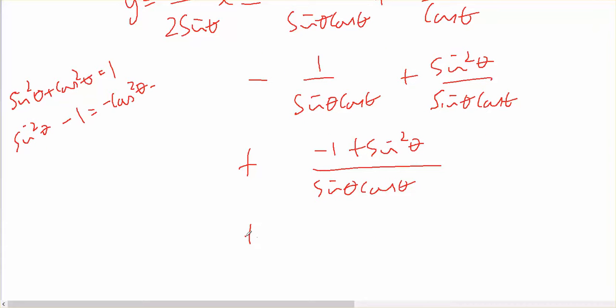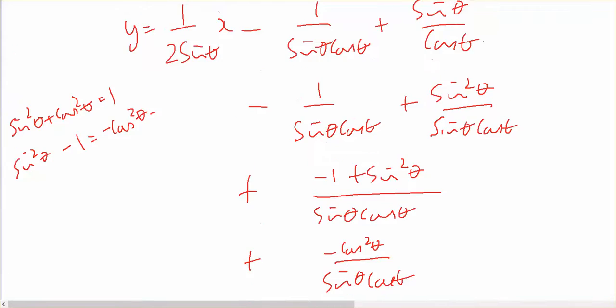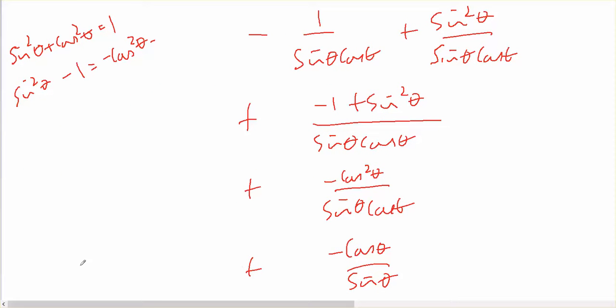So that's plus negative cos squared theta on top of sine theta cos theta. And one of the cosines will cancel to leave negative cos theta on sine theta. And I've still got, for the rest of this, I've got y equals 1 over 2 sine theta x. So my final answer should be,